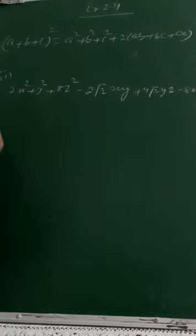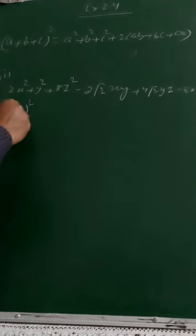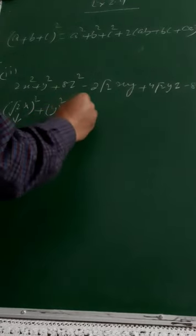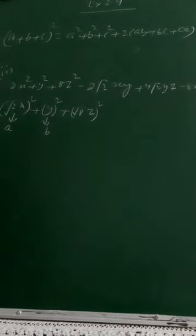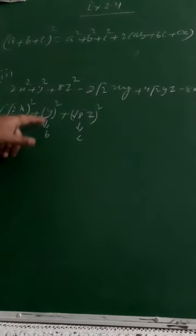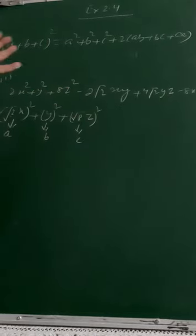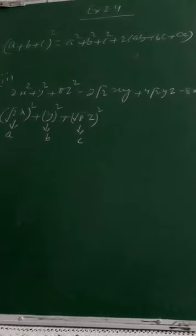x² is the square of x, but I have to identify what to do about 2. I told you, 2 can be written as (√2)², so a = √2·x here. y² itself is the square of y, so b = y. When a term is not a perfect square, always put a square root sign there. And z² is the square of z, so c = 2√2·z.